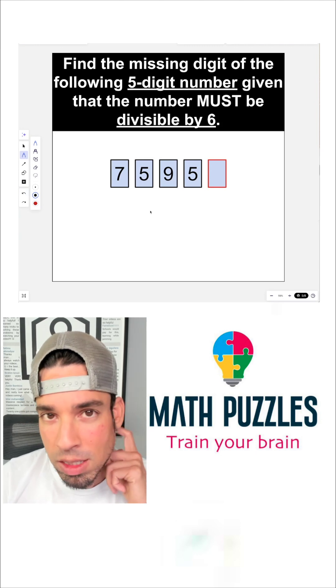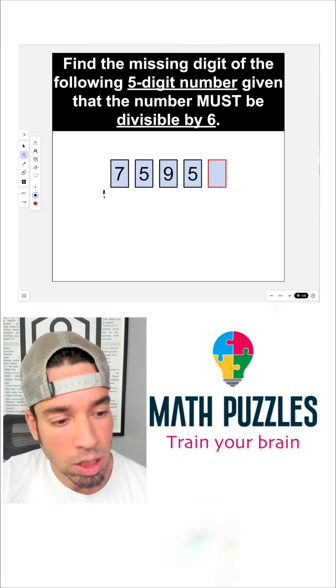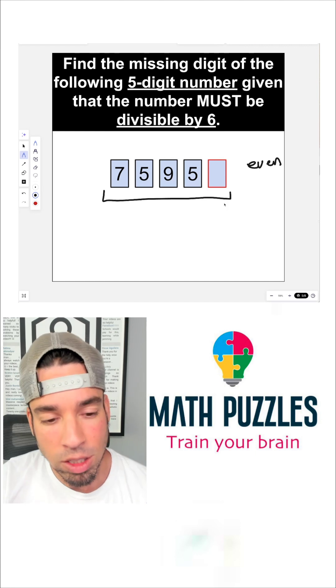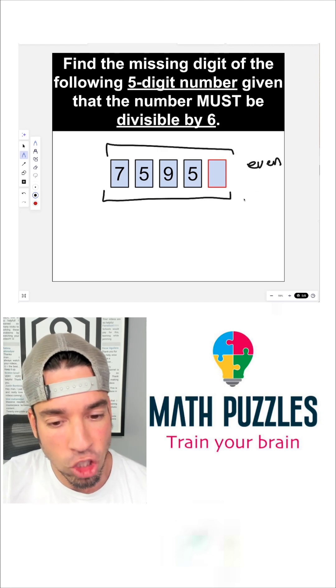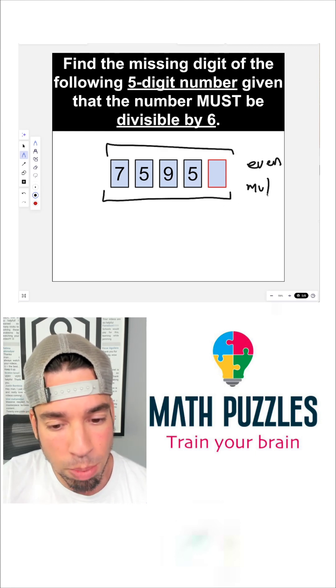So when we're talking about being divisible by six, there are two criteria. The number must be even. The second criteria is the sum of the digits must be a multiple of three.